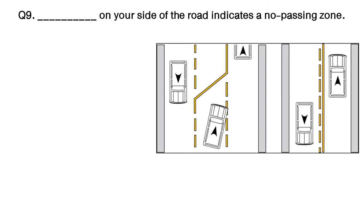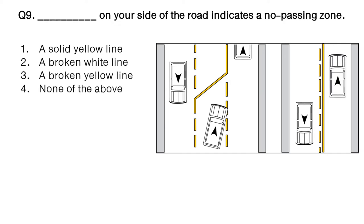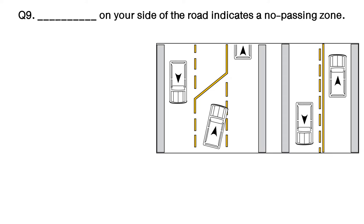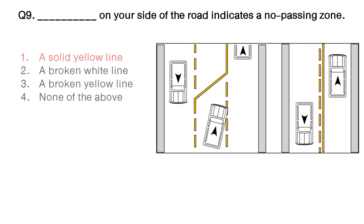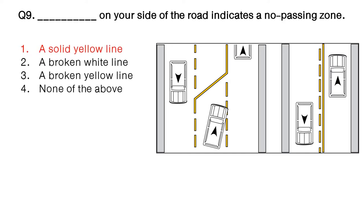Question: which dash on your side of the road indicates a no passing zone? Option number 1: a solid yellow line. Option number 2: a broken white line. Option number 3: a broken yellow line. Option number 4: none of the above. The answer is option number 1: a solid yellow line.